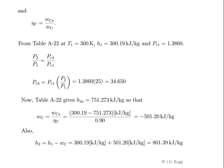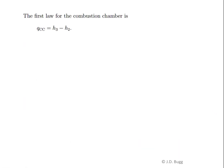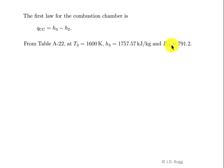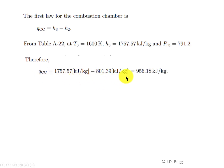Moving to the combustion chamber, the first law gives heat added per unit mass as Q_CC = H3 − H2. Since T3 = 1600 K, we look up H3 from table A22 and also record PR3 for use in the turbine analysis. H3 = 1757.57 kJ/kg and PR3 = 791.2. The heat added in the combustion chamber is Q_CC = 1757.57 − 801.39 = 956.18 kJ/kg.